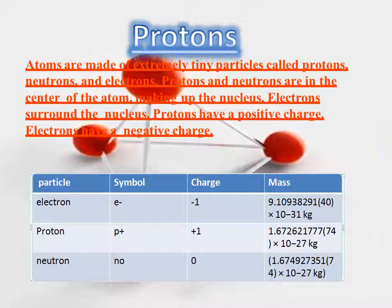Now we will talk about protons. Atoms are made of extremely tiny particles called protons, neutrons, and electrons. Protons and neutrons are in the center of the atom making up the nucleus. Proton and neutron act at the center of the atom constituting the nucleus, and electrons surround the nucleus — they act like planets while the nucleus acts like the sun. Protons have a positive charge and electrons have a negative charge.